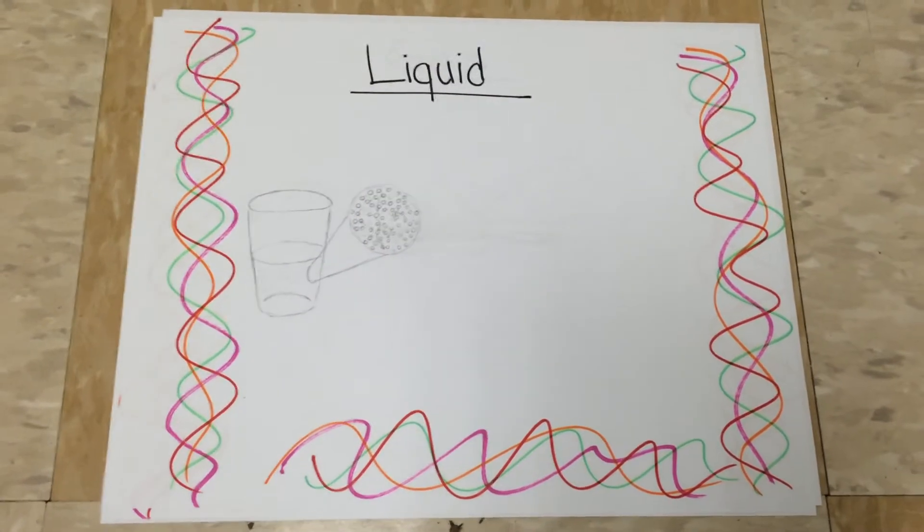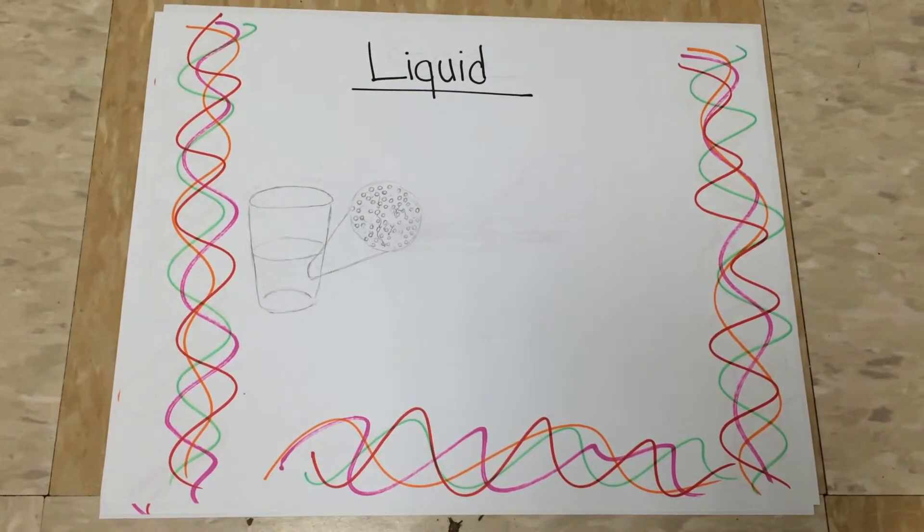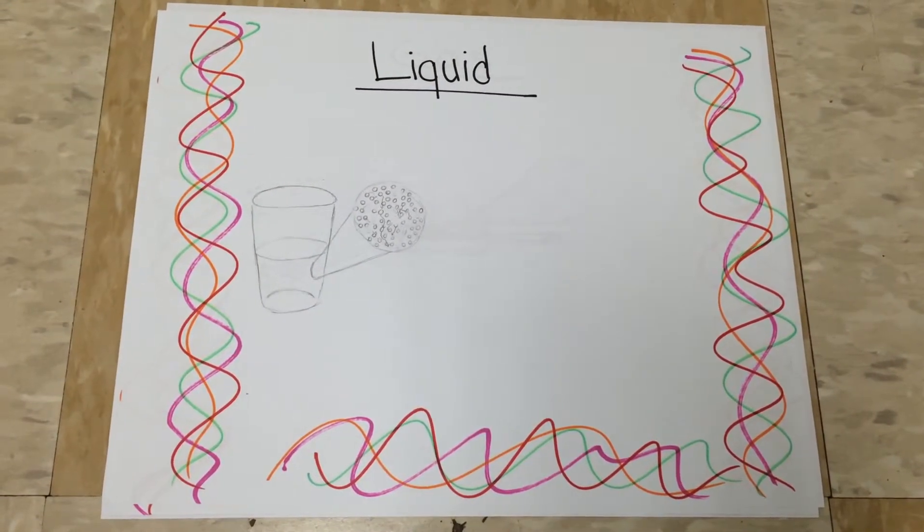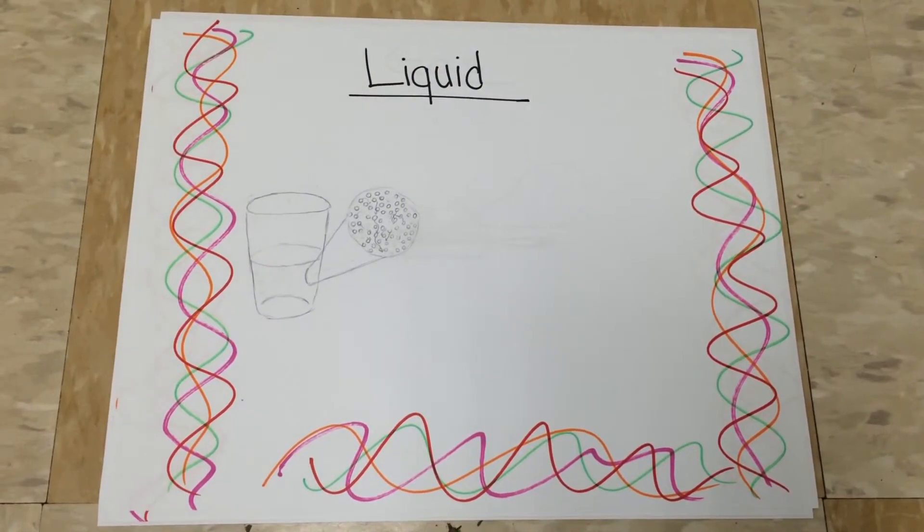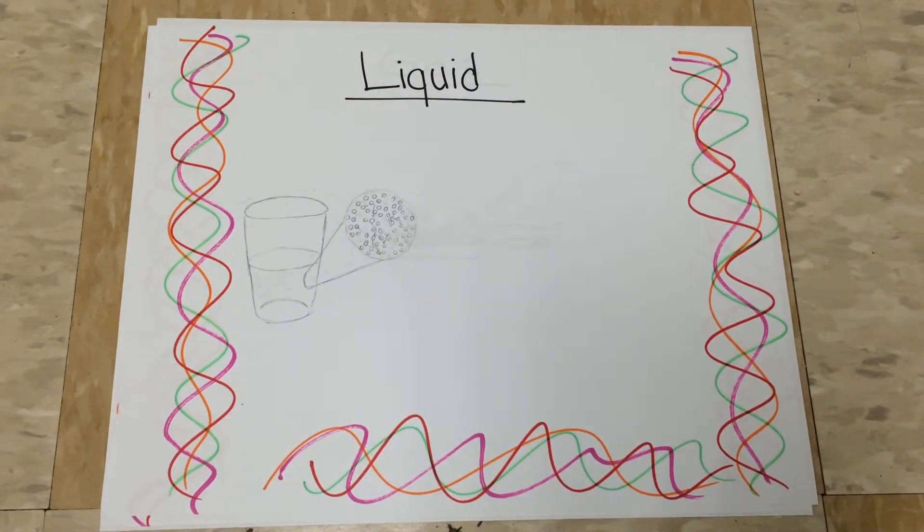As energy is added to the system, the substance can become a liquid. In the liquid state, the molecules are moving around more and are spread further apart than a solid.